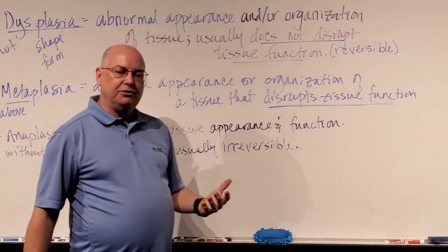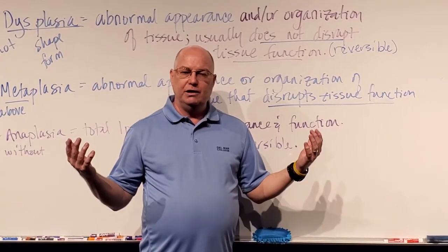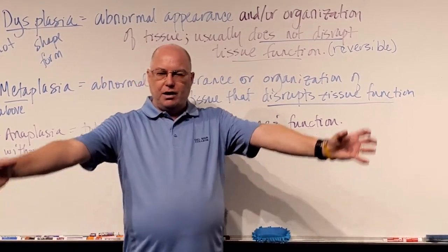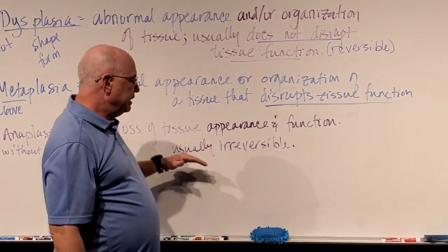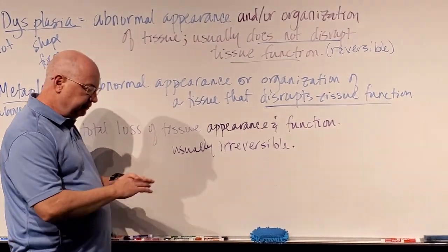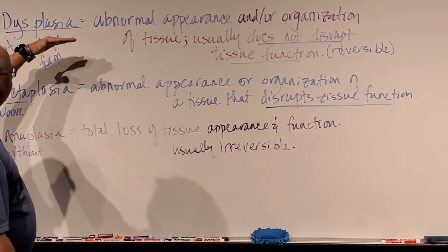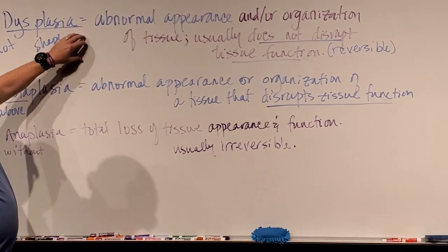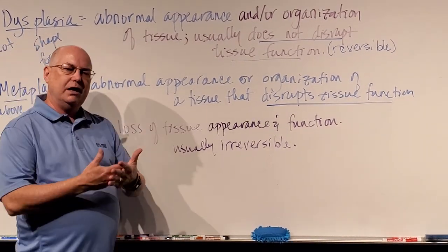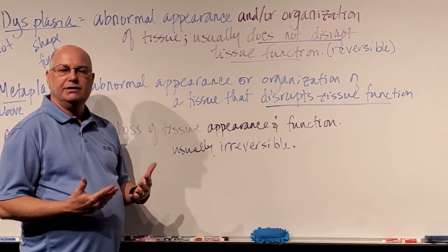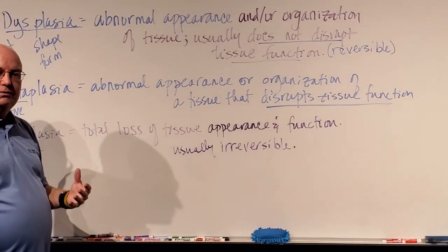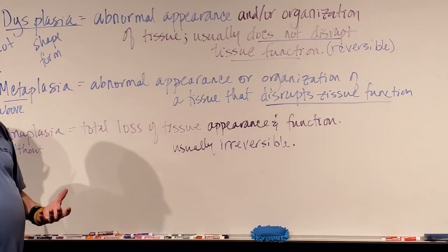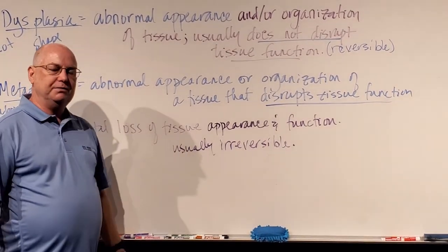In anaplasia, that would be like your bartender coming in and they're missing all their limbs — they can't grab bottles, pour drinks, or wash dishes. They can't do their job at all. They've completely lost their function and their appearance. So these are varying degrees of damage to a tissue, and these terms are used in medical reports: 'we see some mild dysplasia, doesn't look like anything to worry about,' or 'we see some metaplasia and we want the patient to come back and take another look.' If you have anaplasia, you should be concerned and seek medical attention.